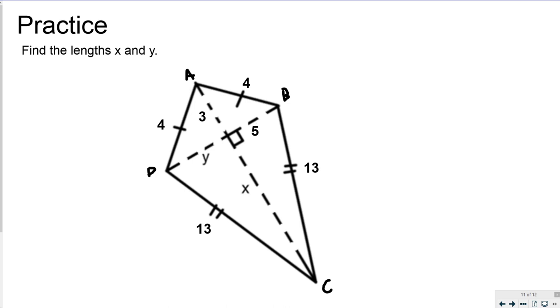And then I'm looking for X, the unknown long length here. So in this kite, Y represents one of the short diagonals, short diagonal halves.